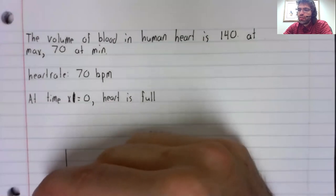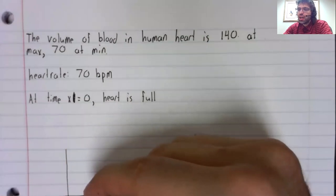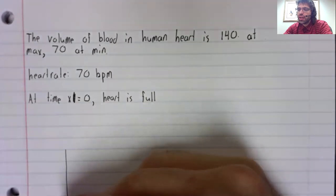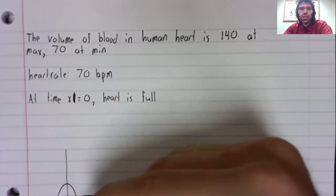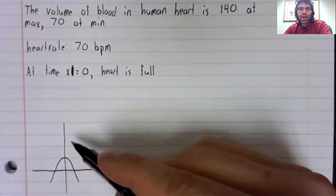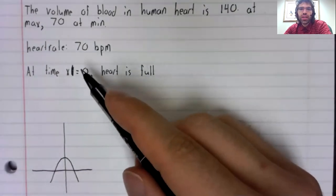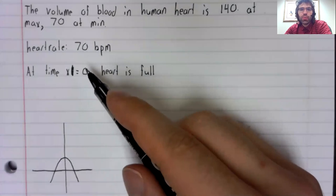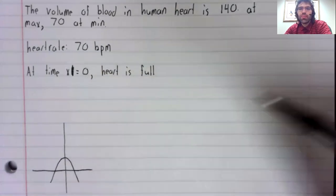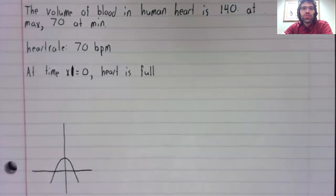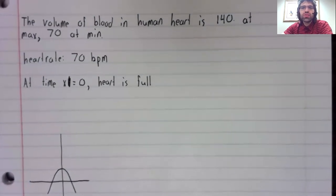And if you look at the sine and cosine, the cosine also has this property that at x equals zero, the cosine has its maximum value. So let's use the cosine function.